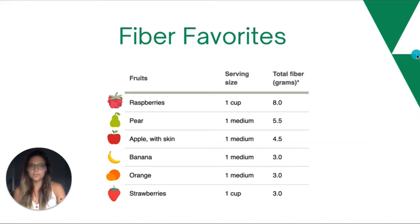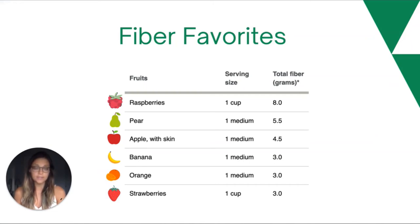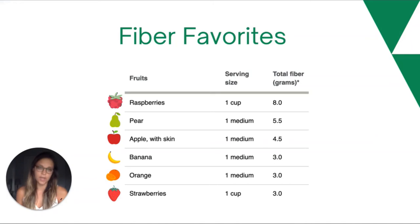Here is a list of some of the highest-fiber fruits you can eat. For example, one cup of raspberries has eight grams of fiber, a whole pear with the skin has about five and a half grams of fiber, and an apple with the skin has four and a half grams of fiber, and so on.